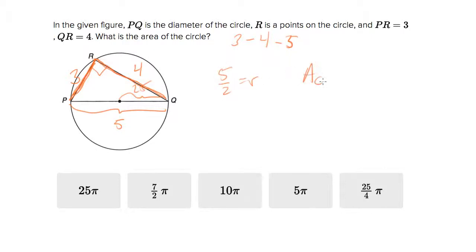The area of a circle is equal to pi r squared, or pi times five halves squared, which simplifies to twenty-five over four pi, which is the fifth answer choice.